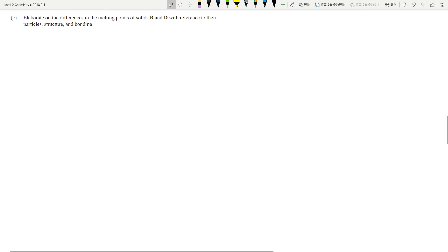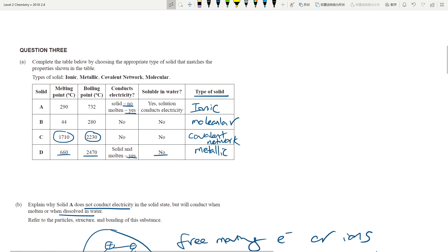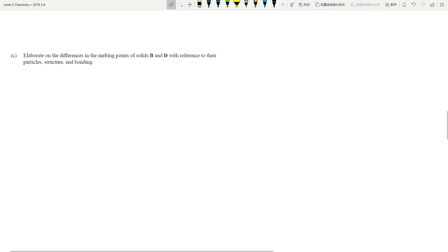Elaborate on the difference in melting point of solid B and D. B is molecular, D is metallic. This is looking at the different types of bonding within the structure. So when you look at B, B is molecular type of solid. And so what does that have? That's held together by weak intermolecular forces. And these force of attraction are really weak. Therefore, you only require a low amount of energy to break them apart. So therefore, low melting point.